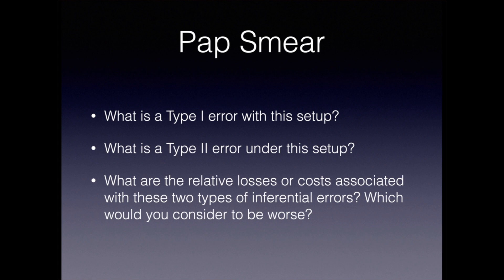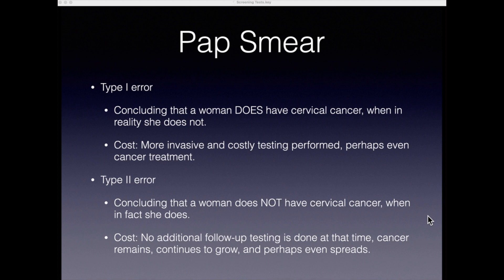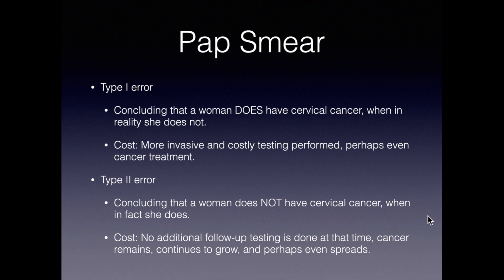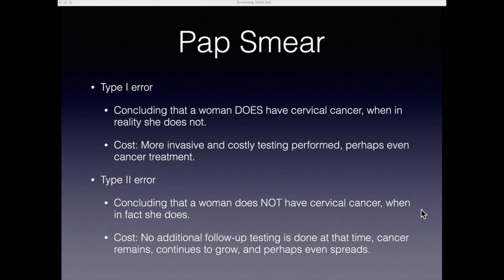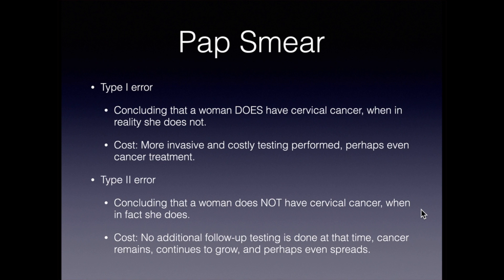With that setup, what is a type one error? What is a type two error? A type one error would be concluding that a woman does have cervical cancer when in fact she does not. The cost associated with that would be more invasive and costly testing performed, perhaps even surgery or cancer treatment. A type two error would be concluding that a woman does not have cervical cancer when in fact she does — and the cost of that is no additional follow-up testing. The cancer remains, continues to grow, and perhaps even spreads, which would be a very bad situation.